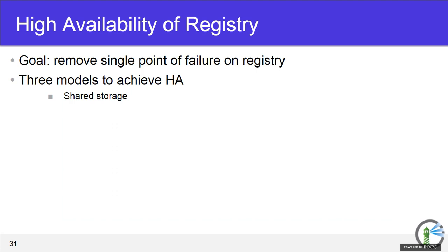High availability is a pretty complex topic and there are a couple of different ways to do it. Our wiki talks about it in detail if you need an HA scenario. It's something we're continuing to refactor — every release gets a little better when it comes to high availability. It's something you can do today, but it's a bit manual with steps you need to take on your own. Check out our wiki on GitHub — it covers all the steps needed, and if you have some systems experience you should be able to get it up and running.